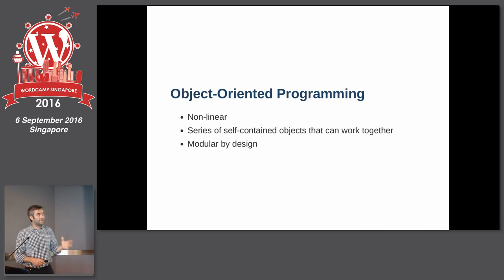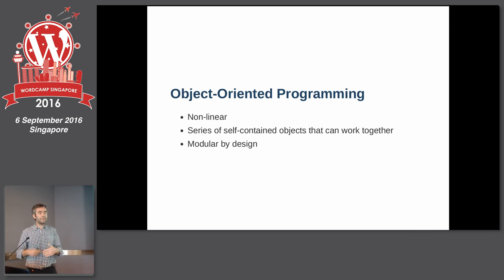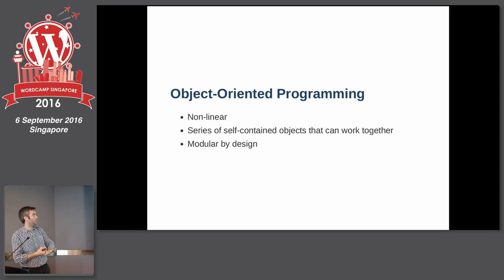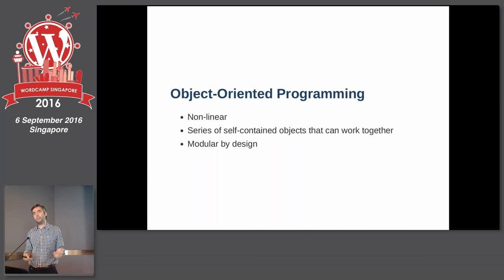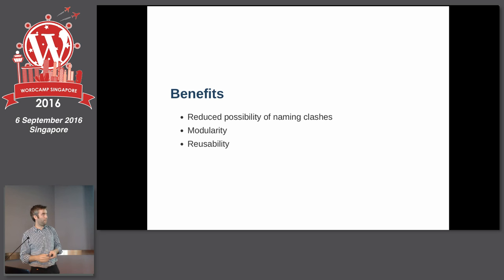Object-oriented programming is non-linear — you're thinking about things in a much more architectural way, not just thinking about how to solve an immediate problem. What you end up with is a series of self-contained objects that can work together. It's modular by design, because you're breaking things up into different objects. At the end of the talk I'm going to talk about some of the debate around this — there are people who don't like OOP, and that's totally fine.